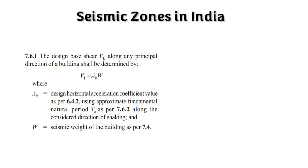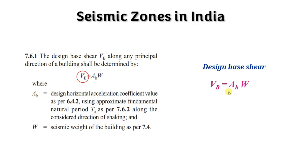As per IS 1893:2016, we mainly find out the design base shear. Design base shear VB is equal to AH multiplied by W, where AH is the design horizontal acceleration coefficient. This acceleration coefficient plays a major important role in finding out the design base shear, and W is the seismic weight of the building — essentially the dead load of the building. So acceleration and dead load are the two key values to arrive at the design base shear.